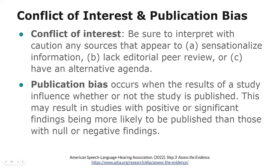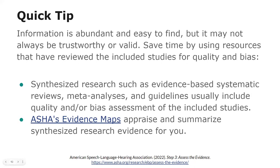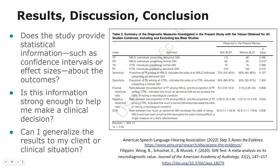Remember that in addition to looking at synthesized research studies such as meta-analyses and systematic reviews, you can also look at the ASHA evidence maps, which provides some appraisal of the sources for you. Last of all, consider whether the study provides statistical information such as confidence intervals or effect sizes of the outcomes. This will help you determine whether the results are statistically significant and also meaningful.